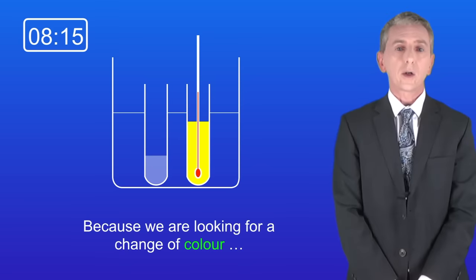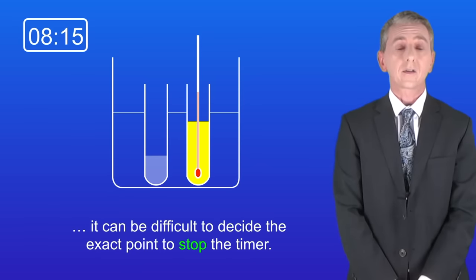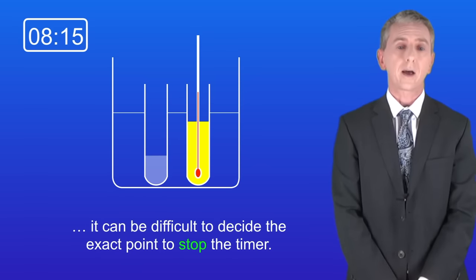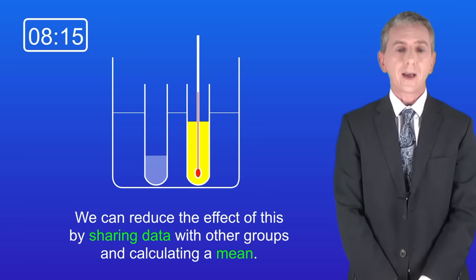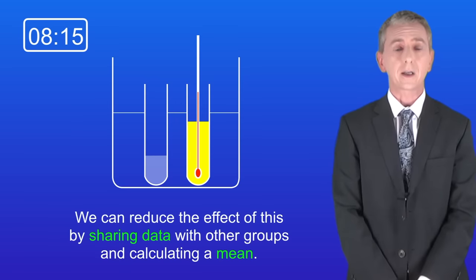Secondly, because we're looking for a change of color, it can be difficult to decide the exact point to stop the timer. We can reduce the effect of this by sharing data with other groups and calculating a mean.